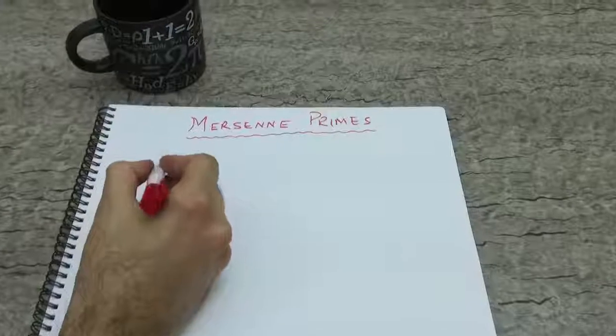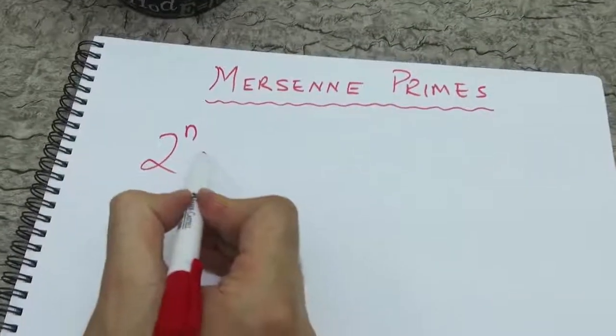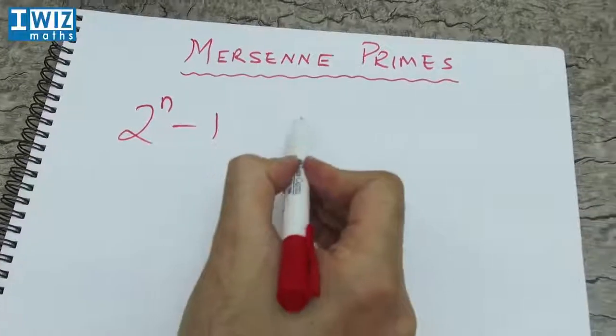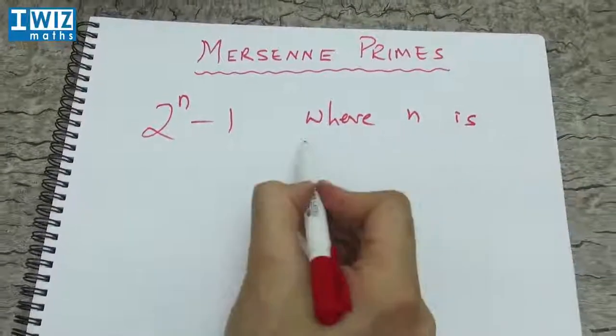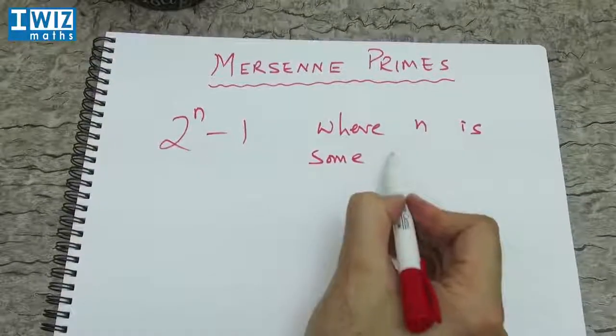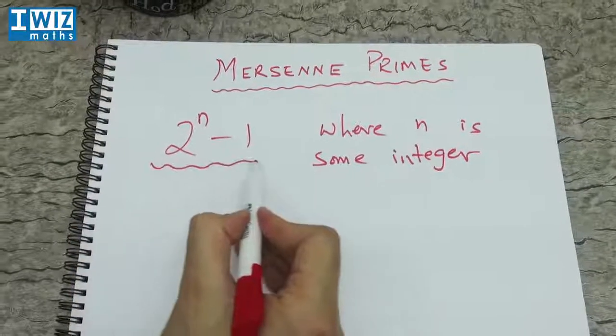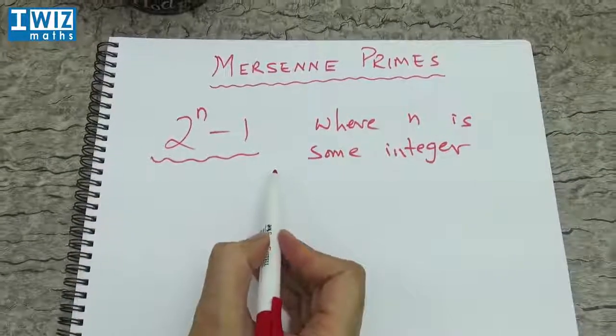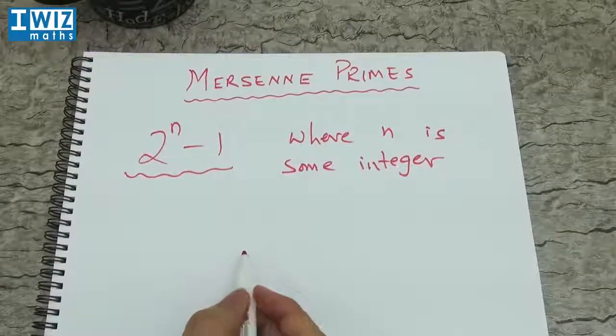So Mersenne primes have the following structure where you have 2 to the n minus 1 where n is some integer. So if this quantity here turns out to be a prime number, then it's also referred to as a Mersenne prime. So let's try a few examples.